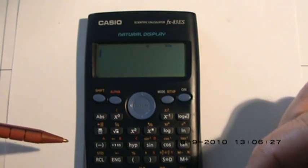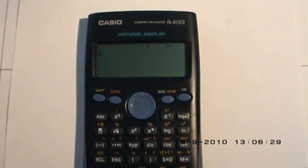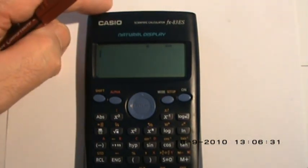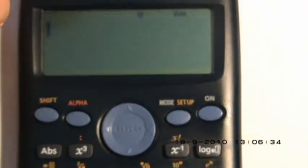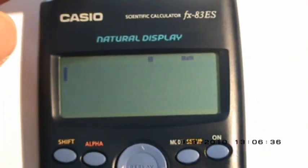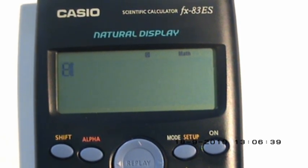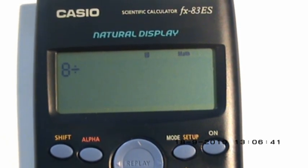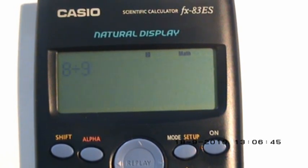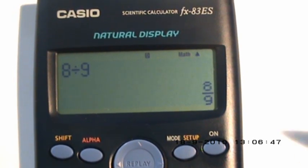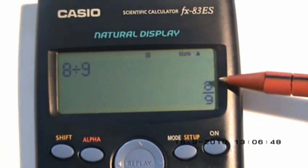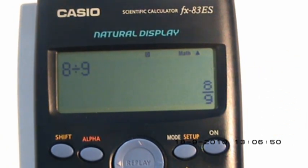Now, to check that you're in the proper mode, it's always worthwhile putting in a simple fraction calculation to start with. If you put in 8 divided by 9 and press equals, you'll see the answer comes up in fraction format as 8 over 9. So we're okay, we're good to go. Press all clear again.